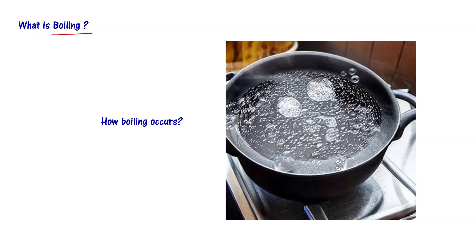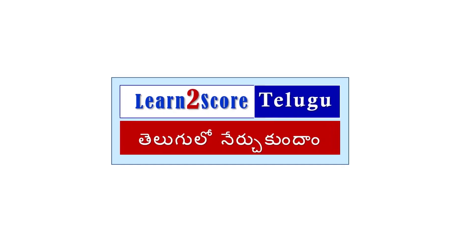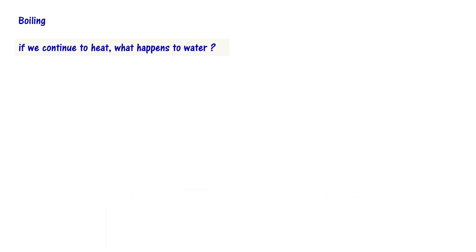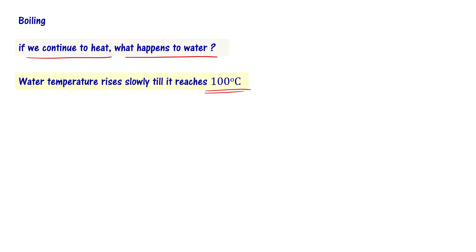Let us now discuss boiling. What is boiling? You will be able to answer how boiling occurs. What happens to the water if you continue to heat it? Water temperature is going to raise slowly till it reaches 100 degrees centigrade.